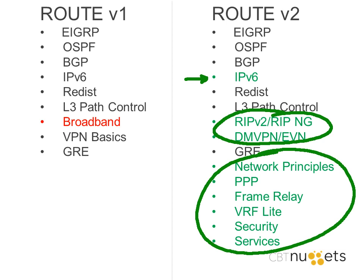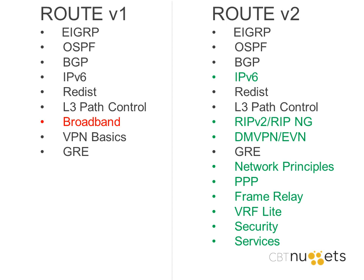All those topic additions in green are really remarkable — a lot of new stuff. When I say network principles, we're talking about the details of TCP and UDP and how they operate. When I say security, we're talking about router-based ACLs and all kinds of additional Layer 3 security mechanisms. When I say services, a hodgepodge of services like DHCP, NTP, SNMP, NetFlow, and IPSLA. When you start dissecting some of these additional topics, we see that we are going to go well beyond the version 1 content.